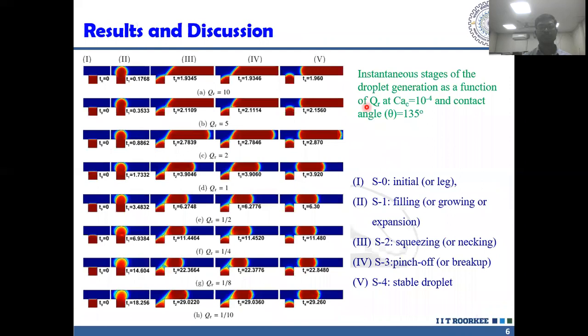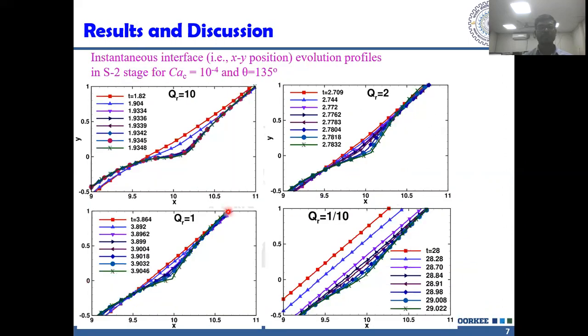Based on the evolution moment of the interface curvature, the droplet generation cycle is classified into five stages, namely initial, filling, squeezing, pinch-off, and stable, as a result of balancing of interfacial tension, viscous and pressure forces at the neck.